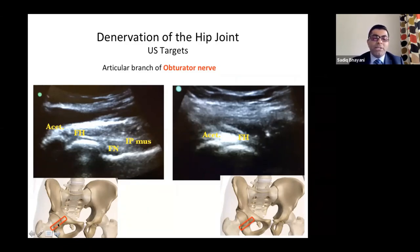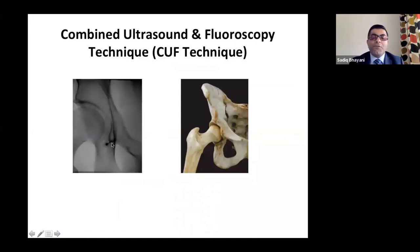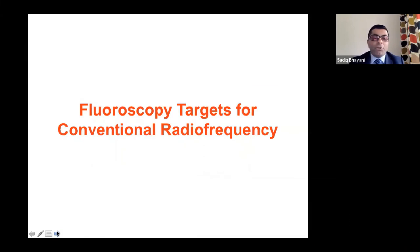For the obturator nerve: look for acetabulum, femoral head, femoral neck, then move the probe medially — you'll lose the femoral head and just see the acetabulum. Park the needle at the inferior portion of the acetabulum — the teardrop on x-ray, or the incisura acetabuli. Park the needle on the lateral side of the teardrop, not medial, because the medial side is where motor branches go to the adductor muscles. Always do motor stimulation before radiofrequency.